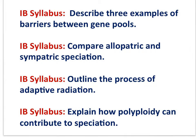I have covered all of these IB syllabus statements in this movie: describe three examples of barriers between gene pools, compare allopatric and sympatric speciation, outline the process of adaptive radiation, and explain how polyploidy can contribute to speciation. Please review these statements to reflect on how well you have internalized the material. Review the movie as needed.